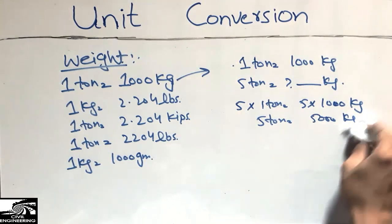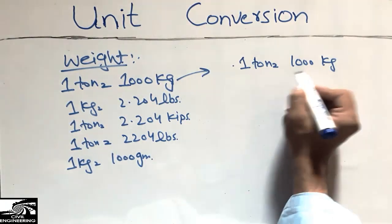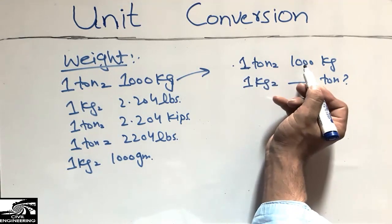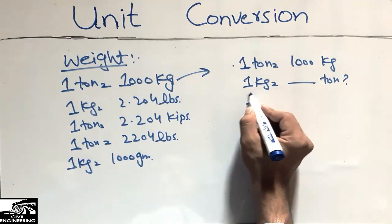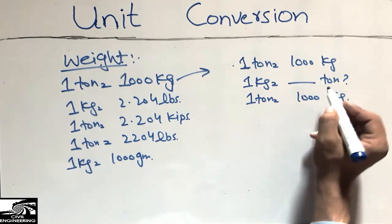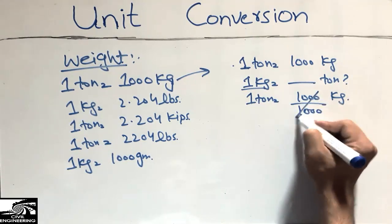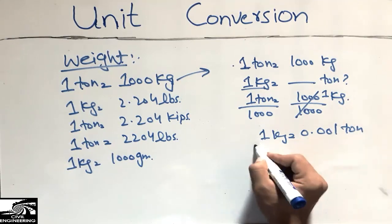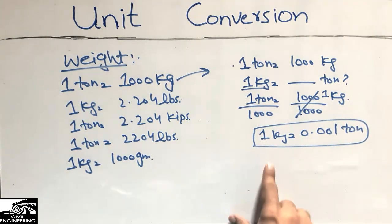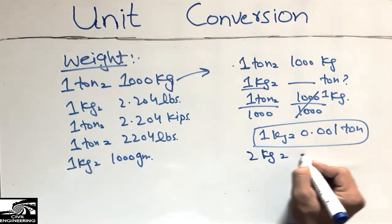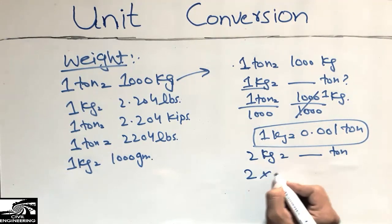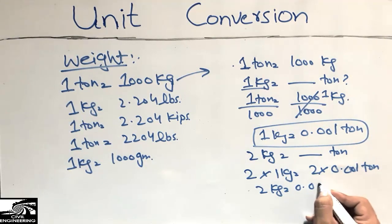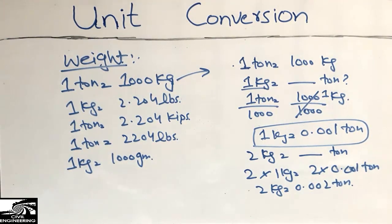Now I will do the reverse: how many tons are in one kilogram. We know one ton equals 1000 kilograms. Dividing both sides by 1000, we get one kilogram equals 0.001 tons. If we want to find how many tons are in two kilograms, we multiply both sides by two and get two kilograms equals 0.002 tons.